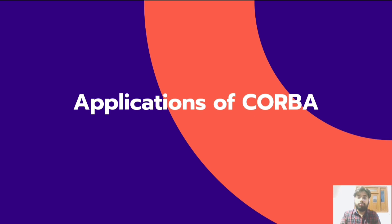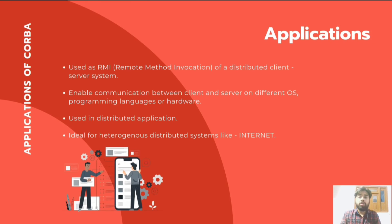Now let's discuss some applications of CORBA — where it would be applicable and what its significance is. In Java, we know the concept of RMI — Remote Method Invocation — which concerns how we interact with a system remotely. Suppose there are two different systems at two different places; how we connect these two systems comes under RMI. CORBA also enables communication between client and server on different operating systems, programming languages, or hardware. It is used in distributed applications and is ideal for heterogeneous distributed systems like the internet.